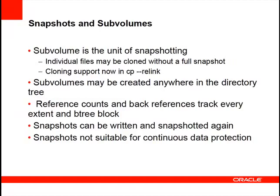If you have an individual file you want to clone without taking a full snapshot, there is an ioctl that we've added, also available in the Util Linux utility via cp --reflink. When you clone a file, we read all block pointers in that file and copy them, taking extra references on those blocks. This is somewhat less efficient than a full snapshot because we may have to read more blocks than just taking a snapshot of a single B-tree block.